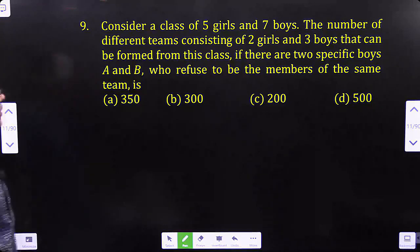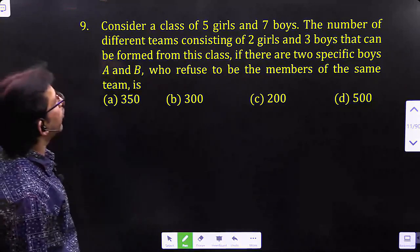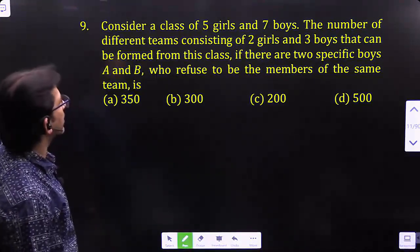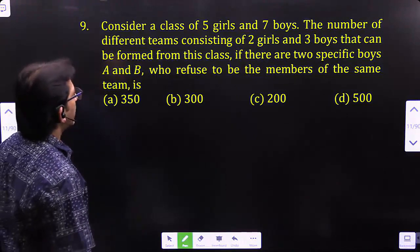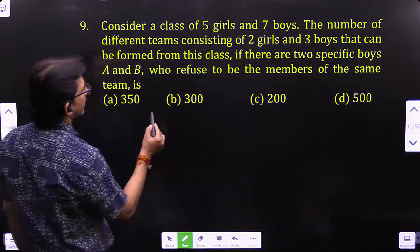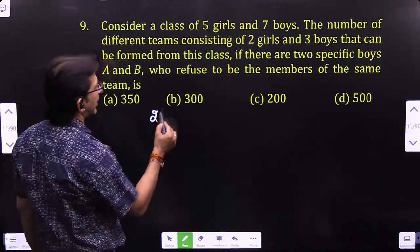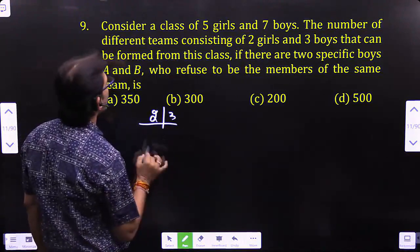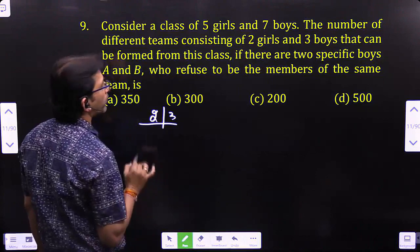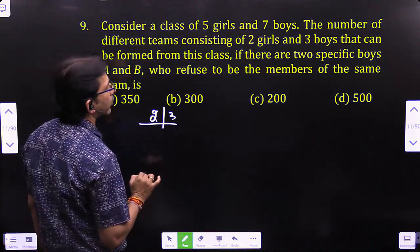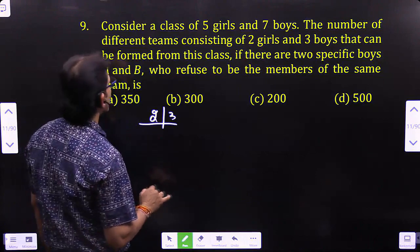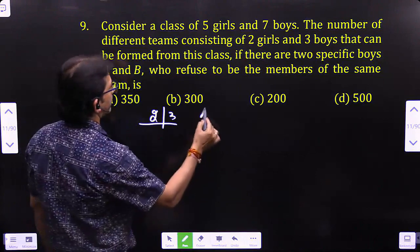Consider a class of 5 girls and 7 boys. The number of different teams consisting of 2 girls and 3 boys that can be formed from this class, if the two specific boys A and B refuse to be members of the same team.